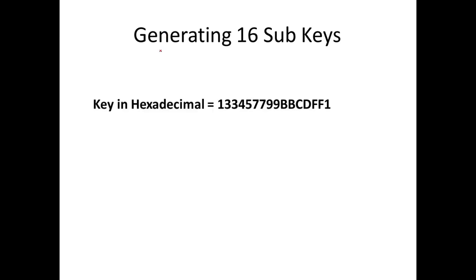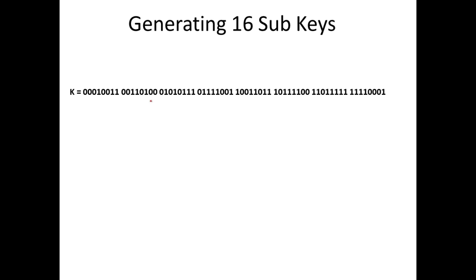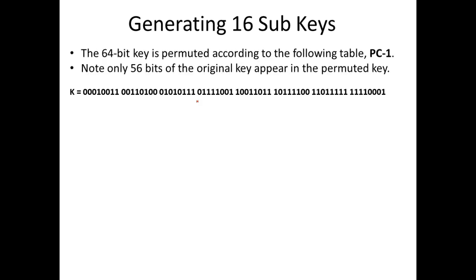Our algorithm starts with a key in hexadecimal — we have 16 hexadecimal digits here, which gives us a 64-bit key. The very first step in generating sub keys is to take the key and apply a permutation — rearranging the bits and also reducing the number of bits from 64 to 56. For that we will utilize a table called the PC1 table.